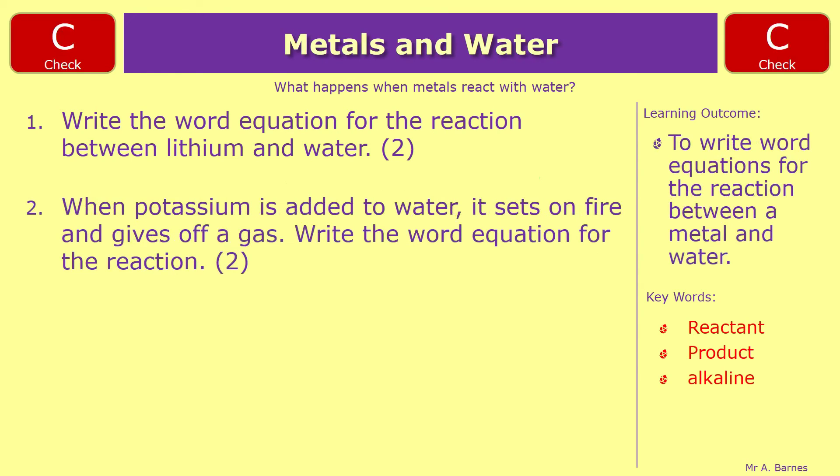Okay let's have a look. So the first one, your reactants are lithium plus water. You won't get any marks for that in this case, it's the two products you want which is lithium hydroxide and hydrogen. So one mark for lithium hydroxide, one mark for hydrogen. It's the same for number two. In this case it's potassium plus water and you get potassium hydroxide and hydrogen.